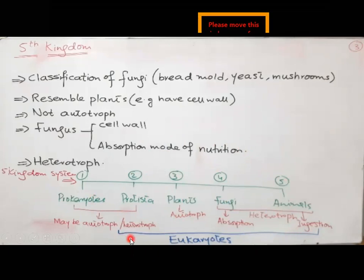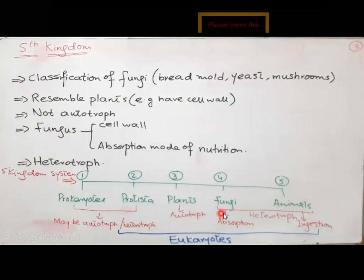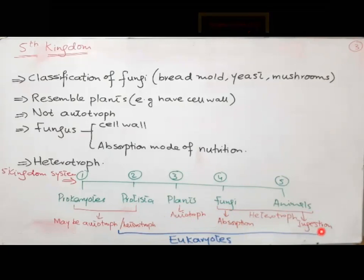Prokaryotes have no definite nucleus, whereas Protista, plants, fungi, and animals are eukaryotes — they have a definite nucleus and membrane-bounded organelles. Plants are autotrophs and multicellular organisms. Fungi are heterotrophs and may be unicellular to multicellular. Animals are also heterotrophs. Fungi undergo the absorptive mode of nutrition, whereas animals undergo the ingestive mode of nutrition — just like us, we take food with the help of our mouth.